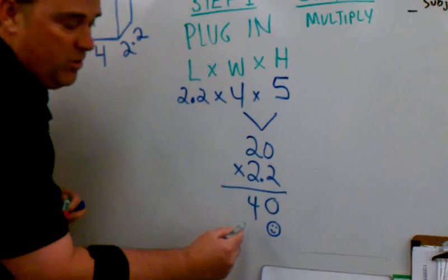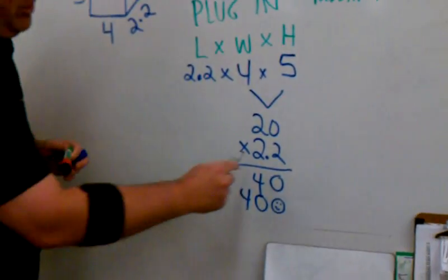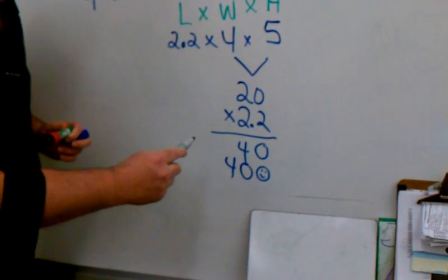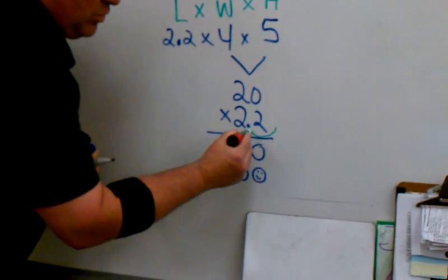Now, when we get to this point, we know we have a decimal. We have to count. Count the decimal. So, follow me right here. Ready? One. And let's do it right here. One. And now, let's add these up real quick.